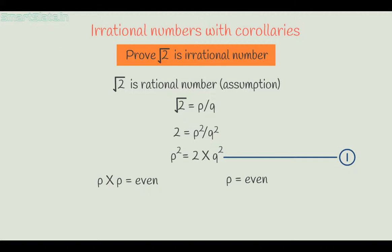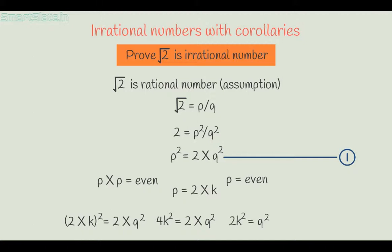Since p is even, it can be represented as p equals 2 times k. Substituting this into statement 1: 2k squared equals 2 times q squared, which gives 4k squared equals 2q squared. After simplifying, we get 2k squared equals q squared. Hence q squared is even, which means q is also an even number. So both p and q are even numbers.